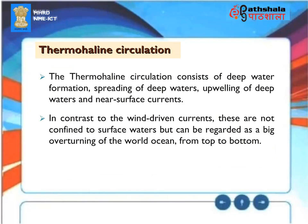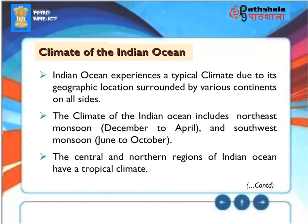Thermohaline circulation. The thermohaline circulation consists of deep water formation, spreading of deep waters, upwelling of deep waters, and near surface currents. In contrast to the wind-driven currents, these are not confined to surface waters, but can be regarded as a big overturning of the world ocean from top to bottom.